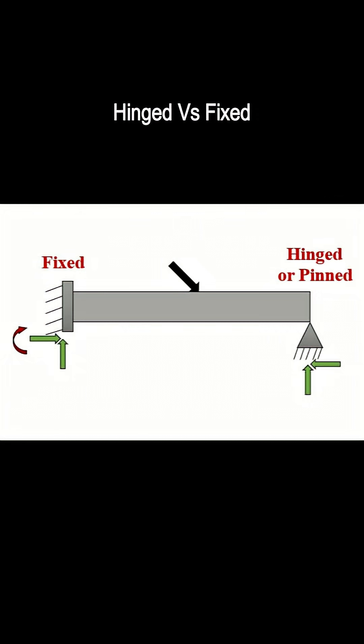In summary, hinged support restricts horizontal and vertical movement and gives two reactions, whereas fixed support restricts horizontal, vertical, and rotation and gives three reactions.